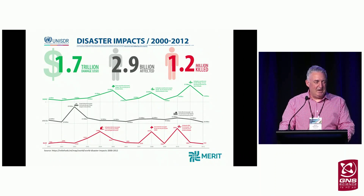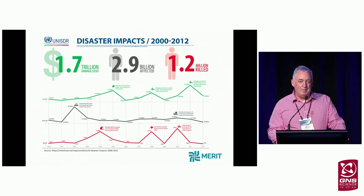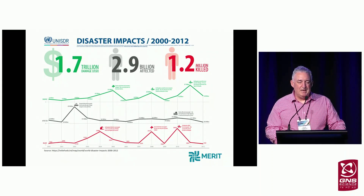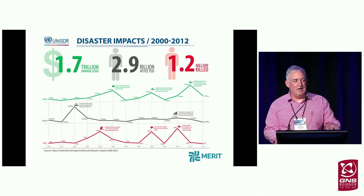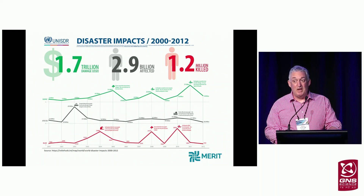Here are some big numbers — and often when we have a natural hazard event, we see these big numbers consistently. We see $1.7 trillion in damages between 2000 and 2012, 2.9 billion people affected, and 1.2 million people killed. When I look at these big numbers I think: what does it mean, and so what? Looking at asset losses tells us a lot about affected infrastructure and buildings, but actually there are a lot of impacts that happen after that event — and that's what I'm interested in.